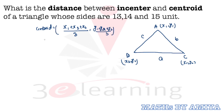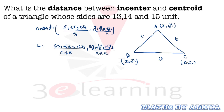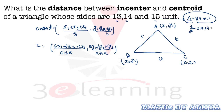Now, the coordinates of the incenter are: ((a·x₁ + b·x₂ + c·x₃)/(a + b + c), (a·y₁ + b·y₂ + c·y₃)/(a + b + c)). What is special about the 13-14-15 triangle? By Heron's formula, the area equals 84 square units. Assuming 14 is the base, using area = ½ × base × height, the height on the 14 side is 12 units.